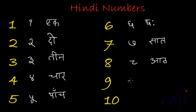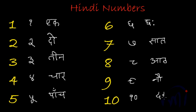This is 9 and it is called nau, written as na with au ki matra — nau. This is 10 and it is called das, written as da-sa — das.